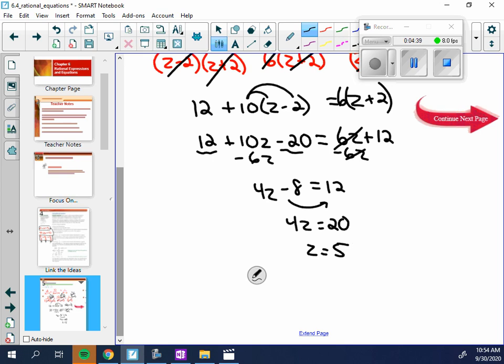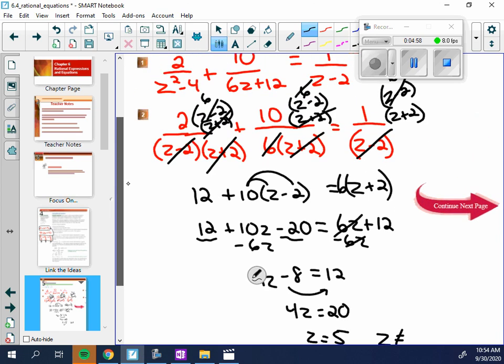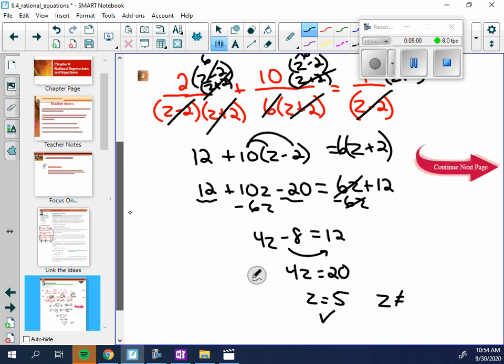You do need to verify on each one of these. So you do need to verify because z, or 5, could have been a non-permissible value. And it wasn't in this case. But you do want to make sure that you verify. So here's this answer. Because z could not be, and if we go back up to the beginning, z couldn't be plus or minus 2. Those are the only ones.